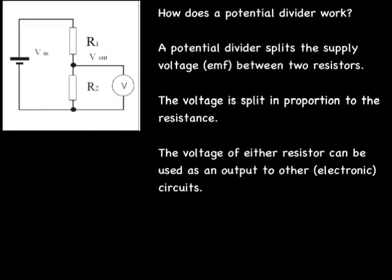So how does a potential divider work? Well, it's very simple. It simply splits the supply voltage, which is labelled V in here, between two resistors, R1 and R2. If R1 and R2 are the same, then the voltage will be split equally, but if they're different, then the voltage will be split in proportion to the resistance. The voltage from either resistor can then be used as an output to another electronic circuit.